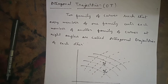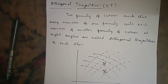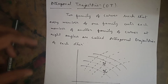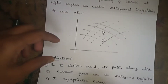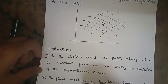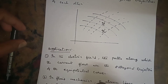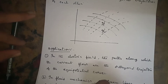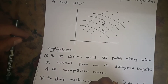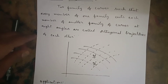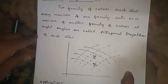Hello everyone, today I'm going to explain orthogonal trajectories. In orthogonal trajectories, we have two forms: one is Cartesian form and another one is polar form. We'll discuss the definition and applications first, and then cover both forms.